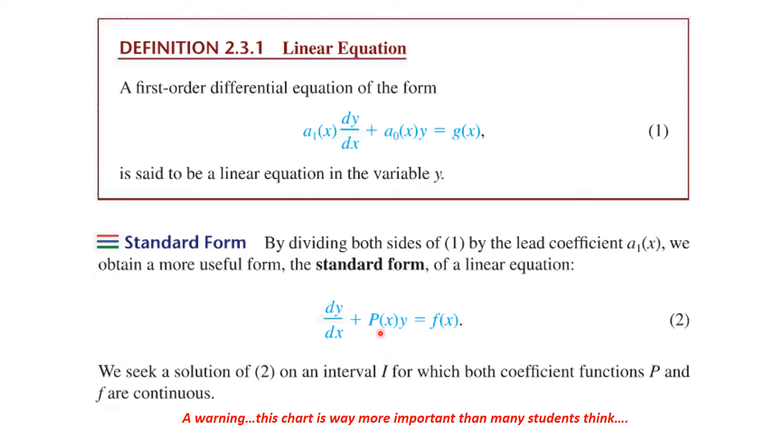and then I have a0 of x over a1 of x, and I'm going to call that p of x, and that is times y is equal to, and this is going to be g of x divided by a1 of x, and we're going to call that f of x. So this is the standard form.